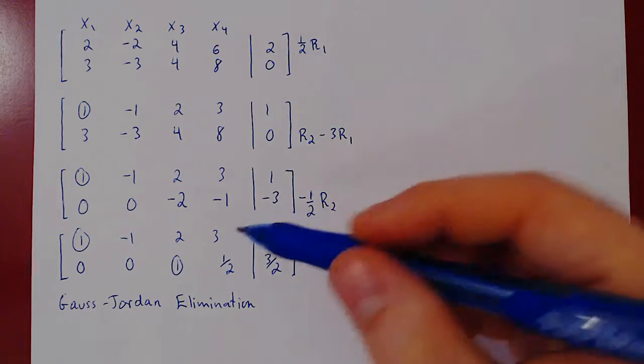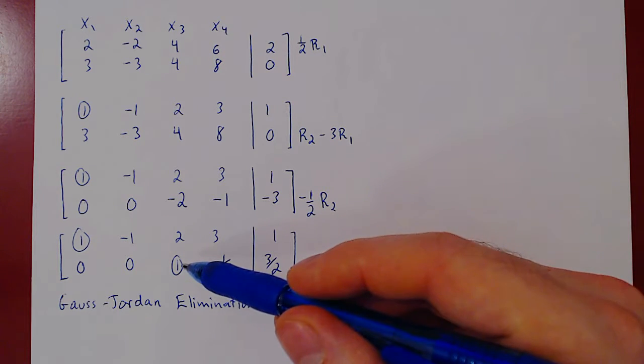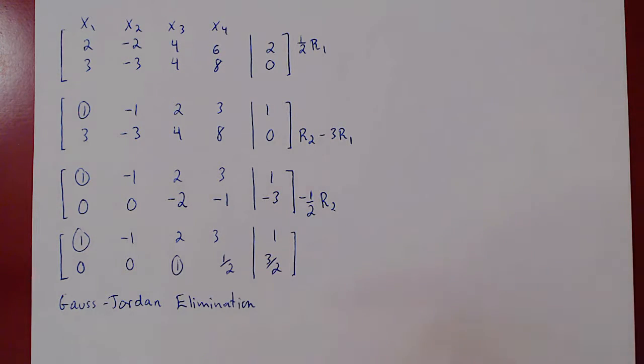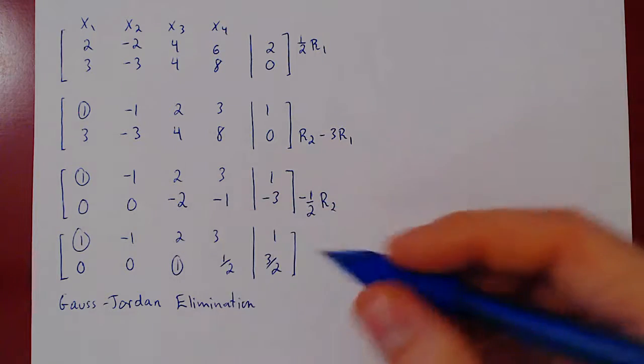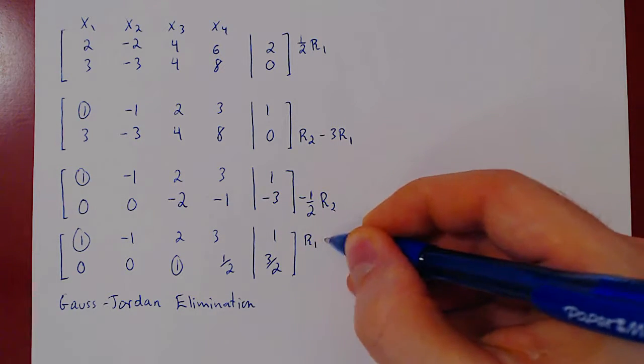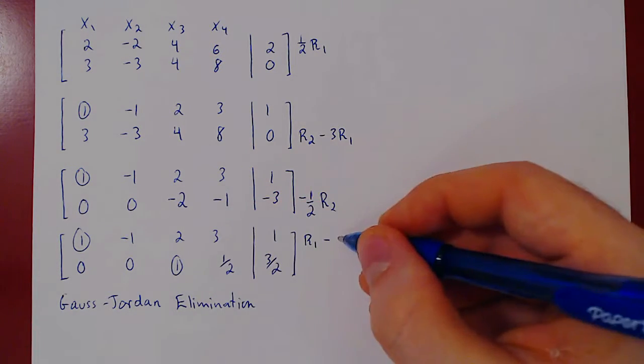And the idea as always is to introduce, from the last leading one, zeros above of every leading one. So to kill off this 2, we will simply do row 1 minus 2 row 2.